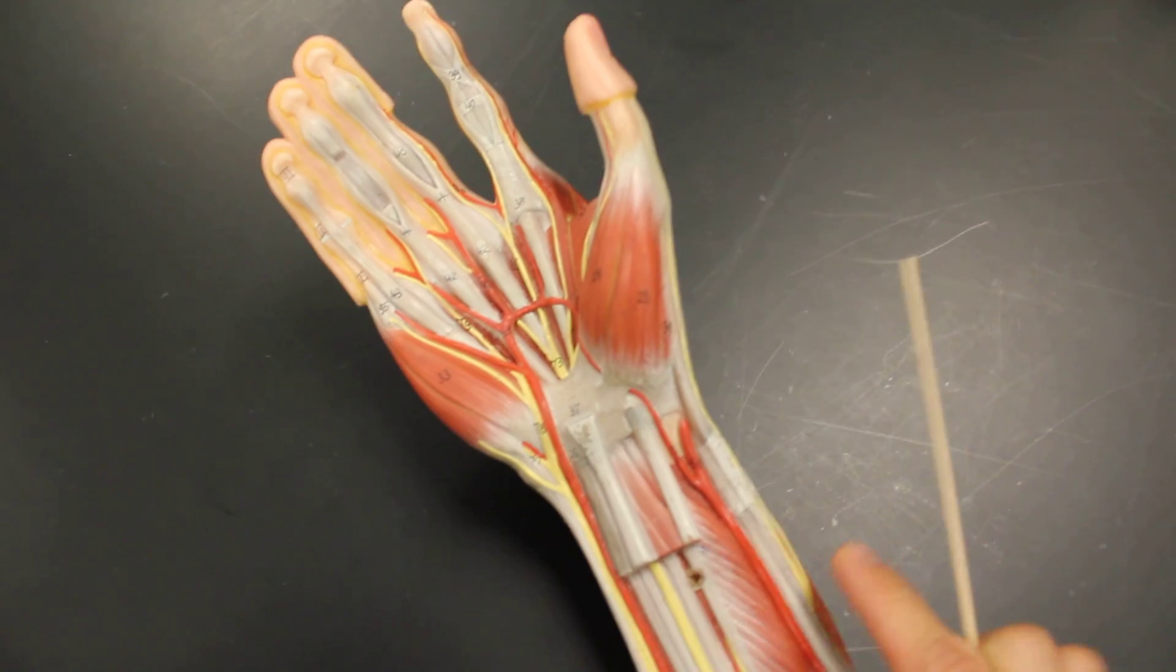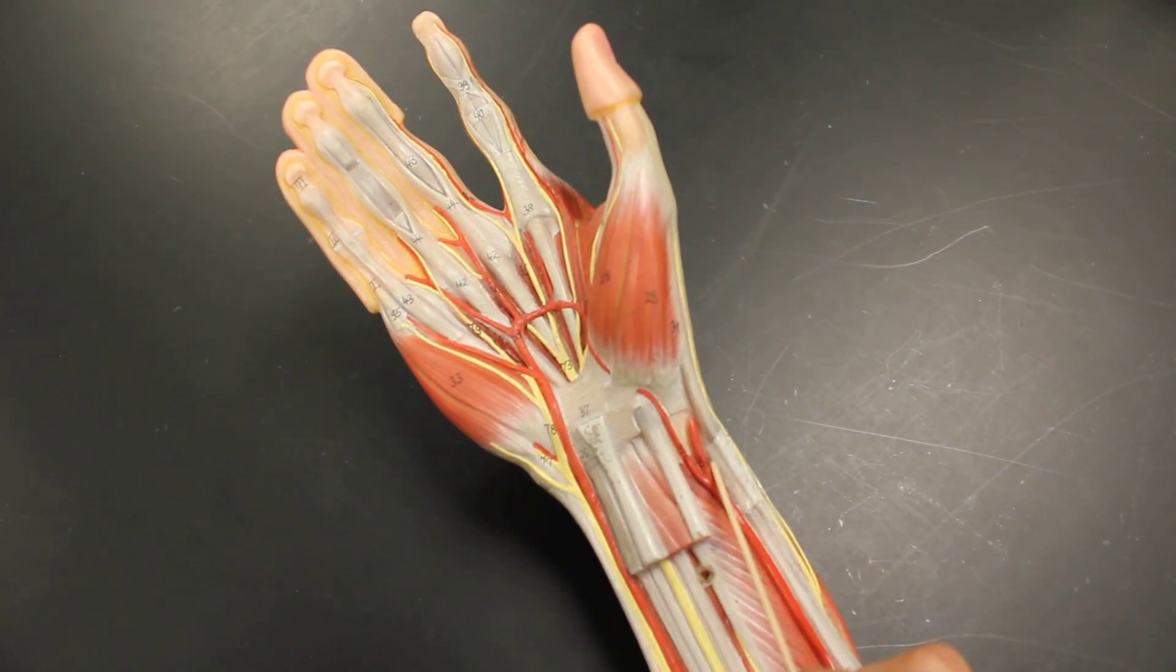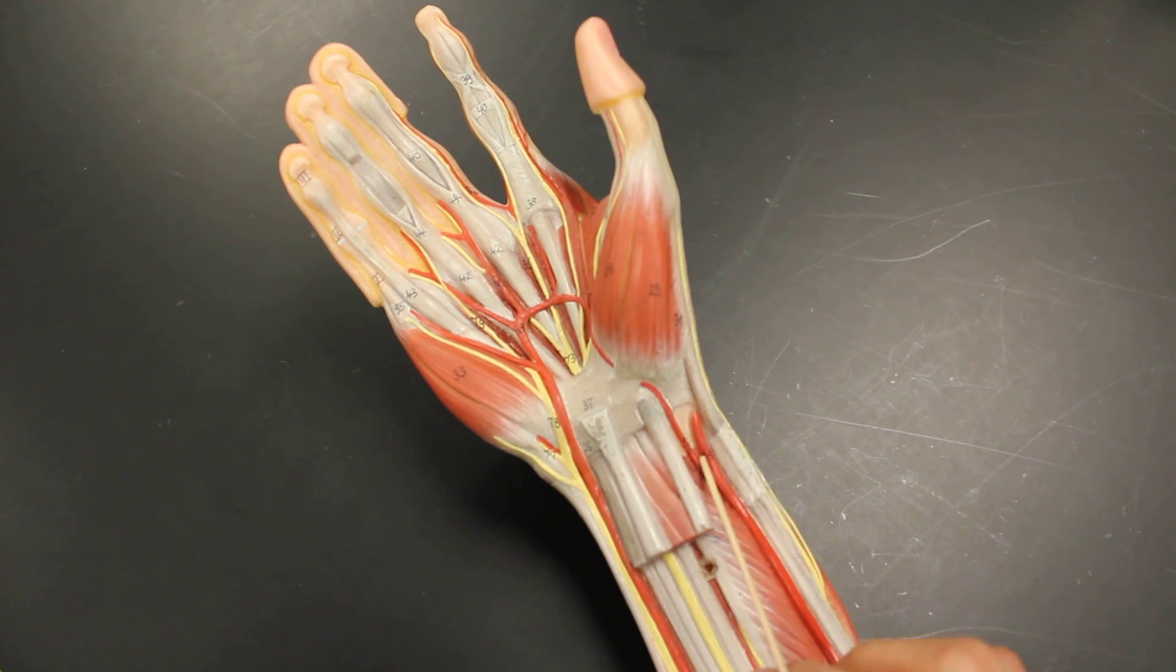You always want to check the thumb because the thumb side is radial. So this is radial and this is ulnar. Radius thumb side.